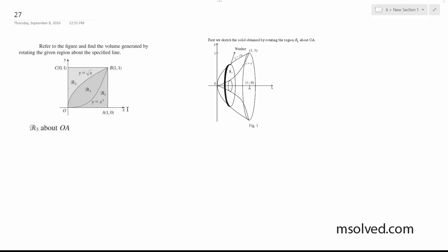Alright, so we're going to rotate this about OA in R3. Here's R3. We're rotating this about OA, which is this right here. So as a result, we get something like this.